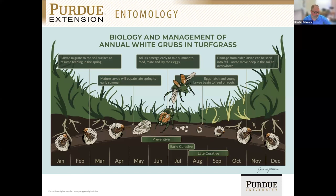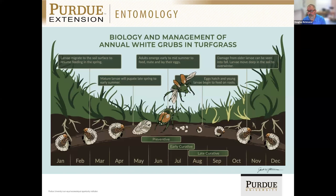The last window of opportunity is what I think of as a late curative approach — that's after we've started to see damage. We know the grubs are there and causing damage; we want to stop that and give the turf a chance to recover. There is a different subset of chemistries appropriate for that, including both chemistries and biological controls. After that, those grubs are going to go deeper into the soil profile and won't be exposed to any control measures by late October and November in northern climates, and then they'll spend the winter and start the life cycle over the following spring.